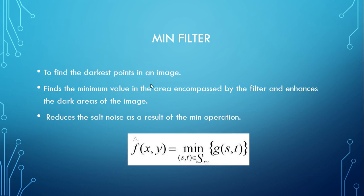MinFilter finds the darkest points in an image. It finds the minimum value in the area encompassed by the filter and enhances the dark areas of the image. It reduces salt noise as a result of the min operation. The formula for MinFilter is shown on screen.